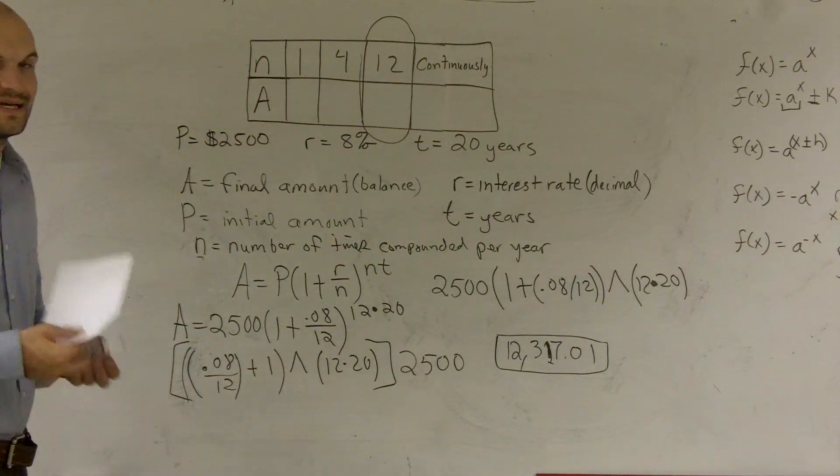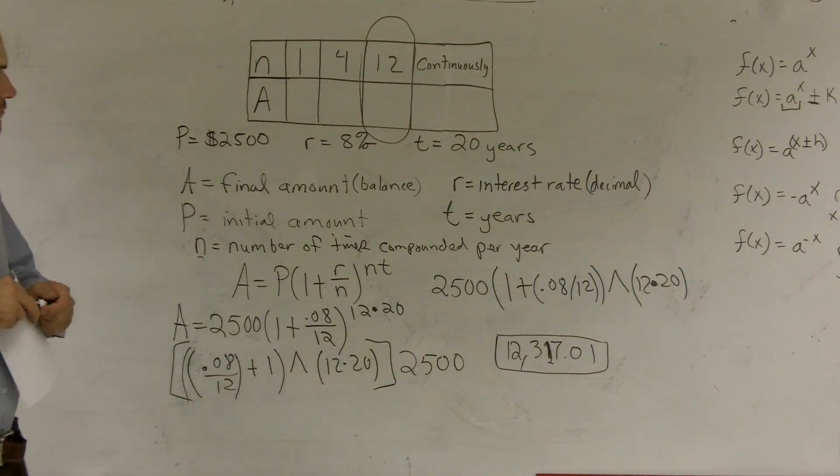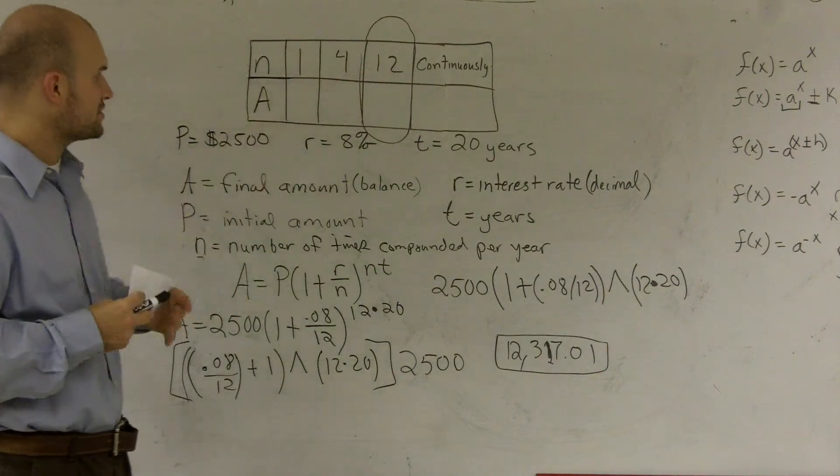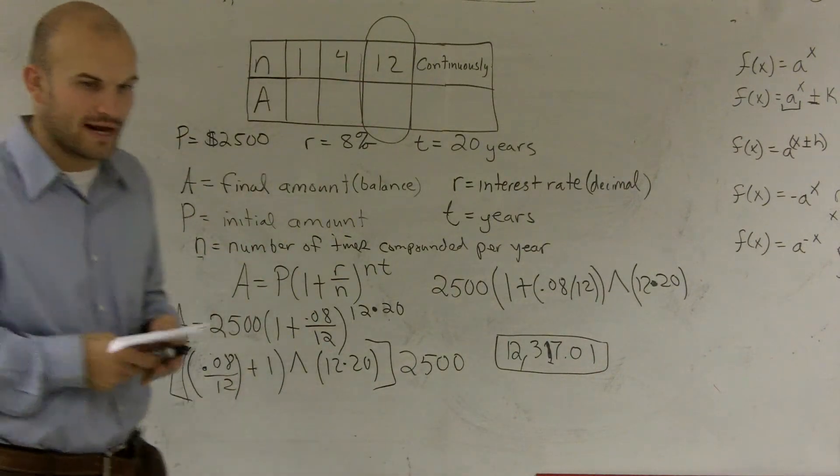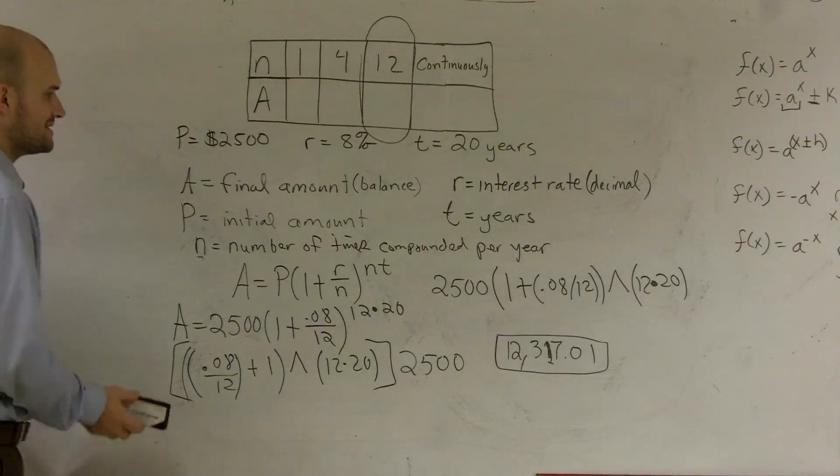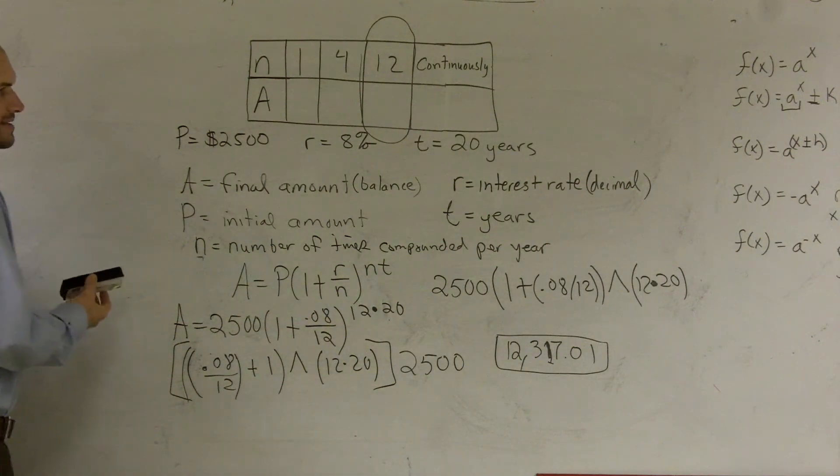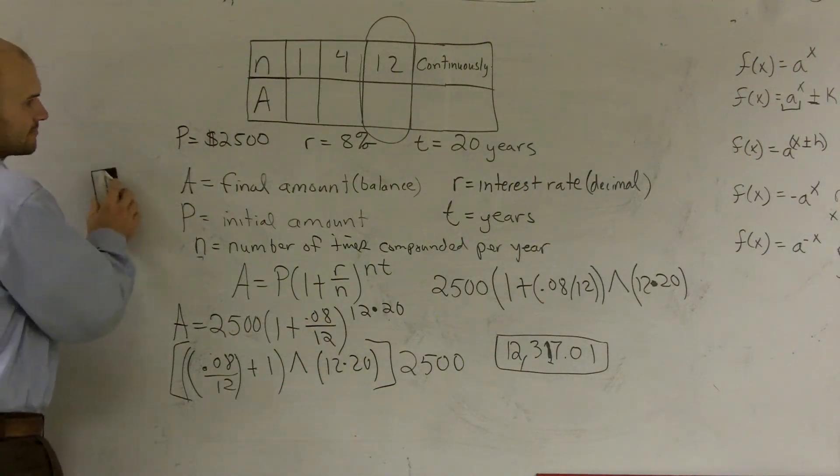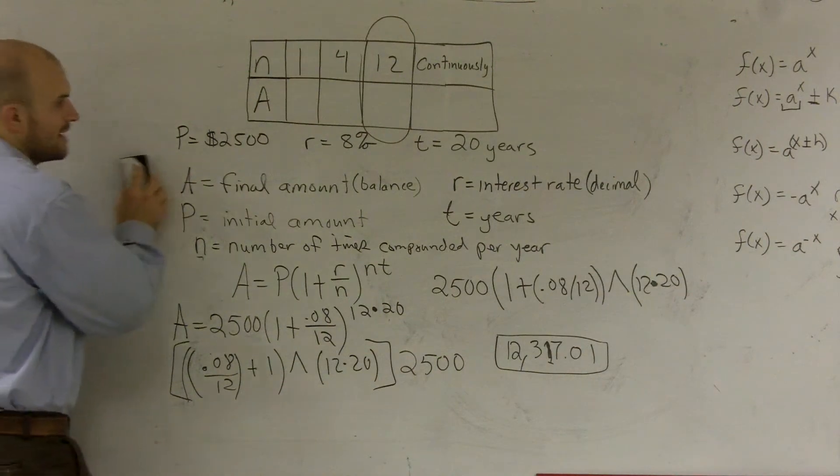And I believe, when I looked at, when I did this earlier, the answer I got for number 12 is 12,307.01. So that's how you find the compound interest for monthly.